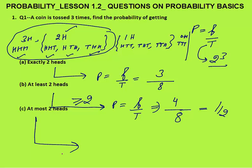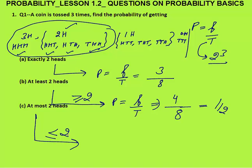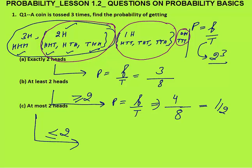Next is at most two heads. At most two heads means maximum we can have two heads, so it means less than or equal to two heads. We will count two heads, one head, as well as zero heads. Probability equals favorable by total. Favorable cases will be seven — two heads, one head, zero head — divided by total cases of eight. So probability is 7 by 8.